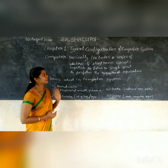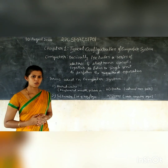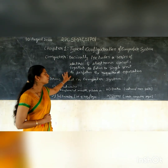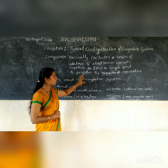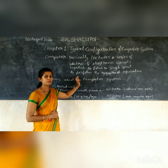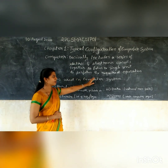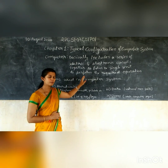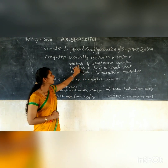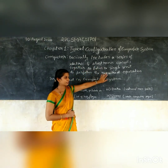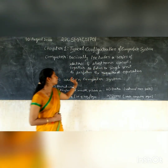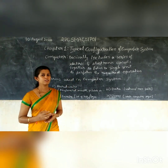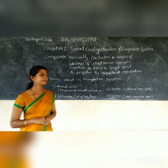Computer basically includes a series of electronic and electrical circuits together to form a single unit to perform the required operation. So computer is a combination of electrical circuits to perform the required operations which are required by the user.